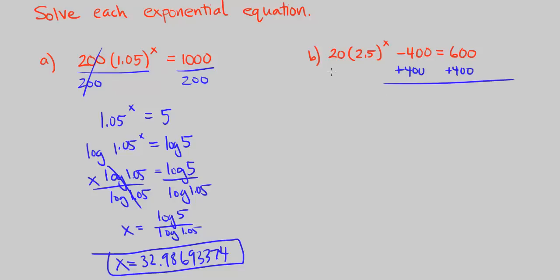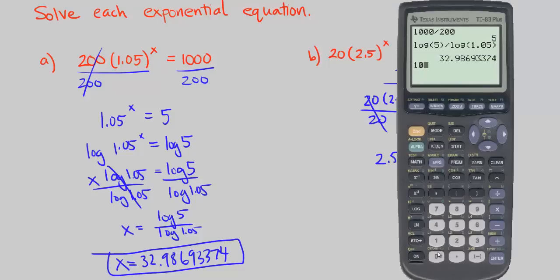Because then we're going to be able to do multiplication and division to both sides of the equation and not have to distribute it to the 400 as well. Now we can divide both sides by 20. These are going to cancel out. We're left with 2.5 to the power of x equals 50. You could check it: 1000 divided by 20, that's where we get our 50.